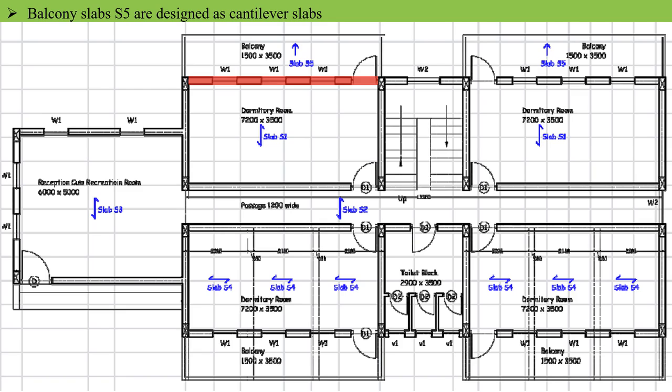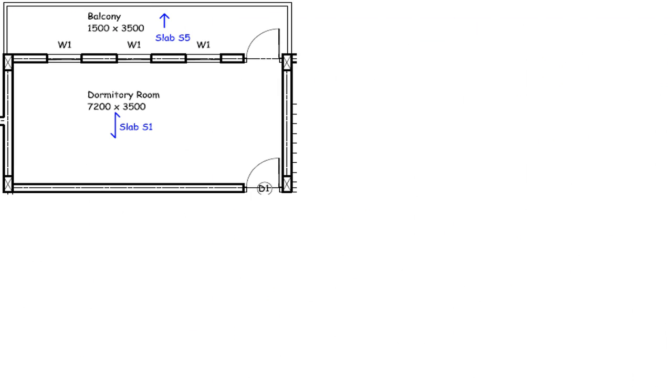In this design, we are going to select slab S5 and design it as a cantilever slab. I am talking about this particular patch of a balcony. Now let's see this particular part in detail.